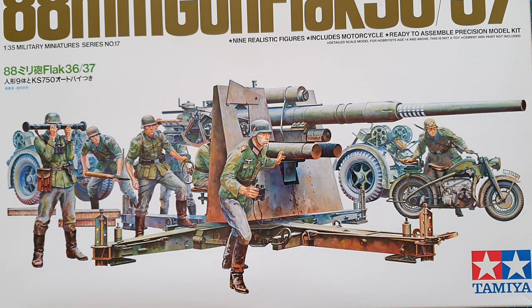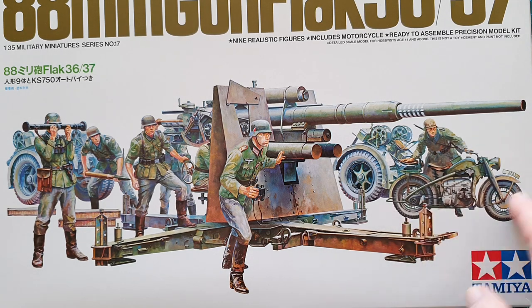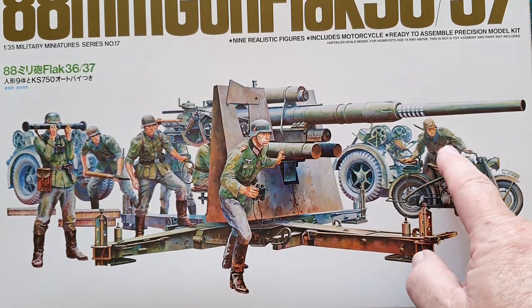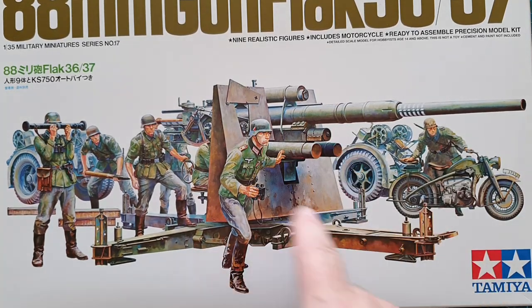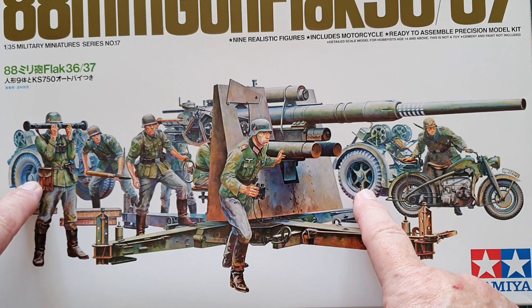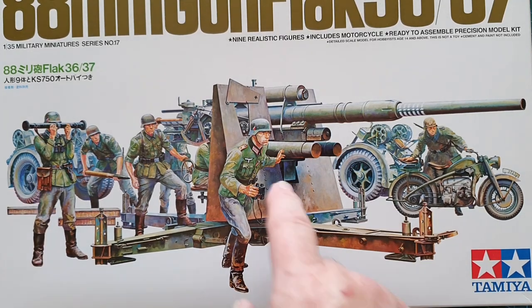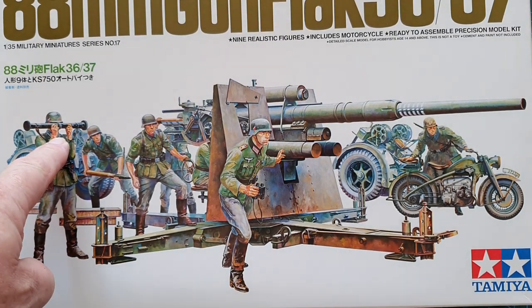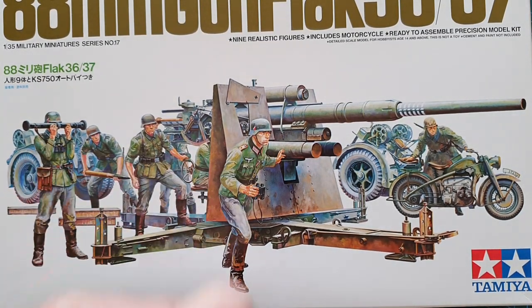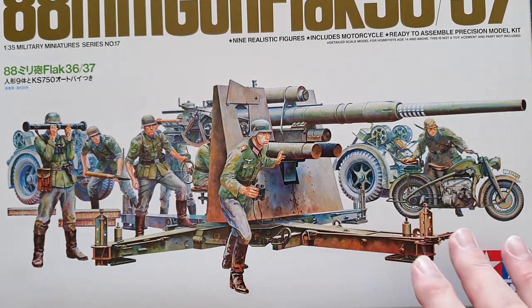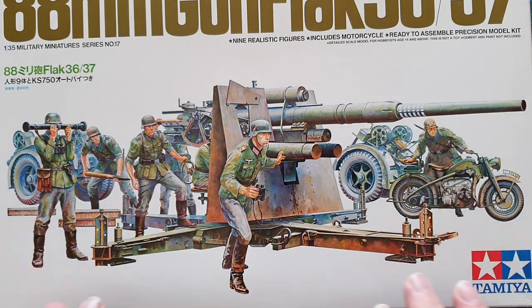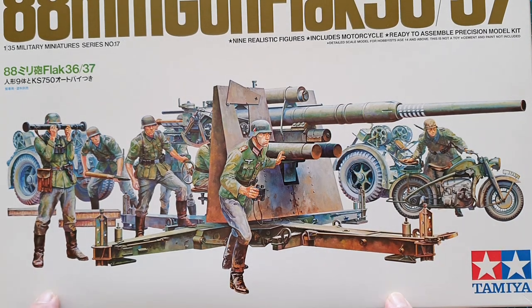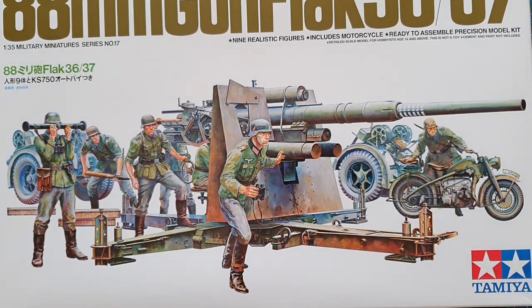As you can see, you get the Zundapp motorcycle with the rider, the 88 with the transport wheels, and eight crew figures to go along with it, one of which has the rangefinder for the gun. Really nice packaging hasn't changed much, in fact I don't think it's changed at all since the 70s.